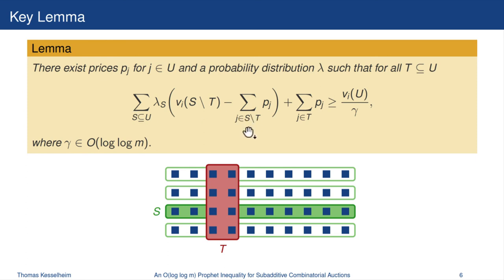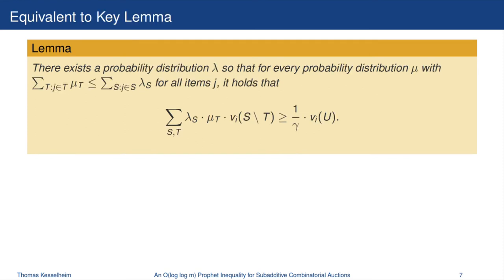How do you prove such a lemma? For now, let's assume we already know the probability distribution and we just want to figure out whether these prices exist or not. All these constraints are actually linear constraints in terms of the prices. So we can write down an LP — if it has a solution, then there exist prices; if not, there are no such prices. How can we show an LP has a feasible solution? We can consider its dual and show that its solutions are bounded. This way we get to an equivalent formulation of the key lemma.